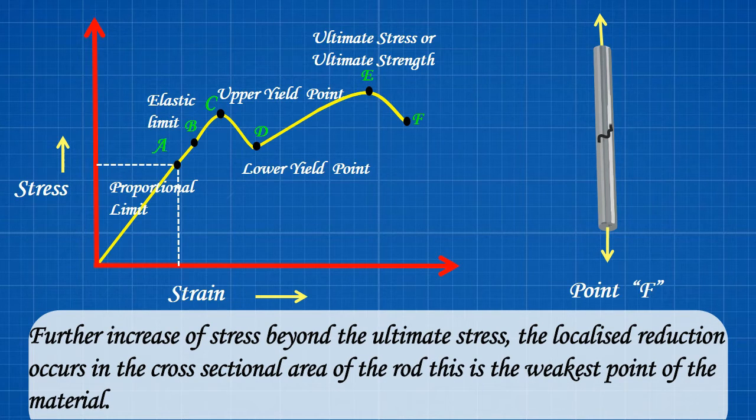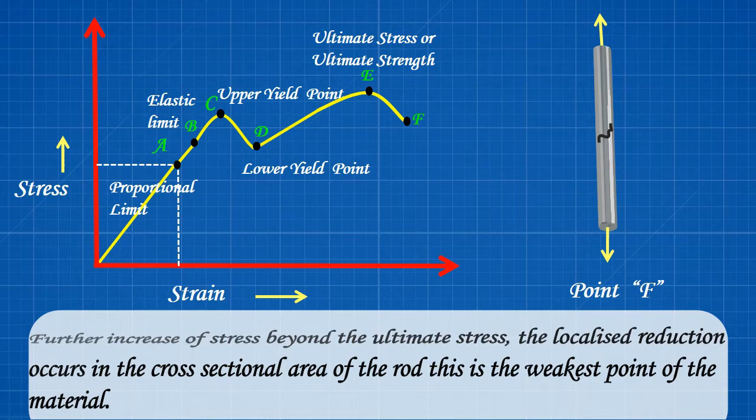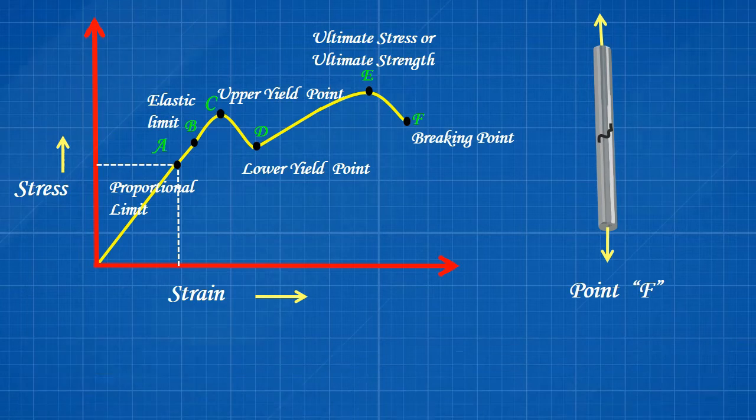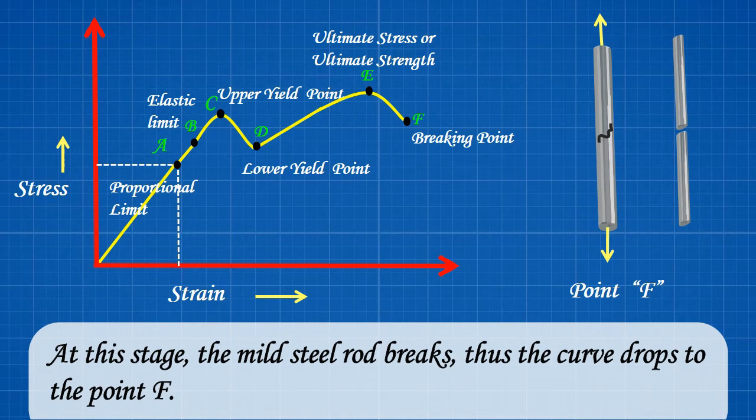Further increase of stress beyond the ultimate stress, the localized reduction occurs in the cross-sectional area of the rod. This is the weakest point of the material. This is called as necking stage that means a breaking point stage. At this stage, the mild steel rod breaks, thus the curve drops to the point F.